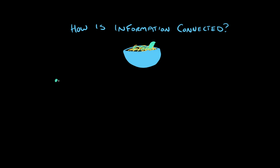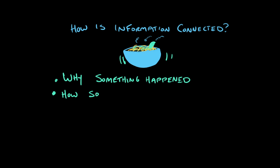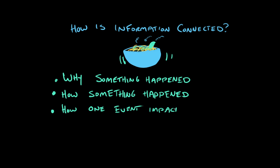In a piece of non-fiction, we can learn why something happened — why the pasta was made; maybe I was hungry. We can learn how something happened: I cooked it in boiling water, then drained it, put some sauce on top, and put it in a bowl. We can also learn how one event impacted other events. Say I had a very late lunch at 4 p.m. of this pasta, and then by 7 p.m. I didn't have as much of an appetite, because I'd spoiled it with that big bowl of pasta.